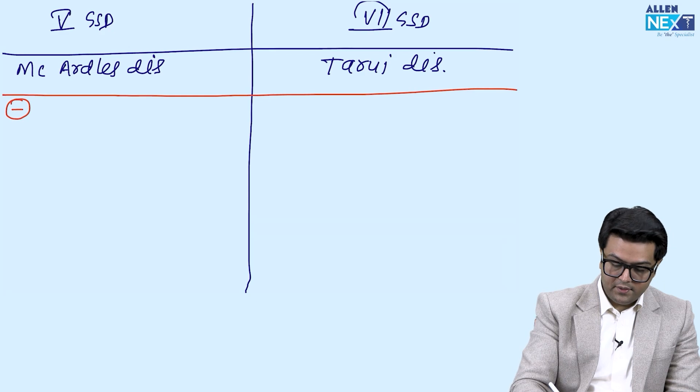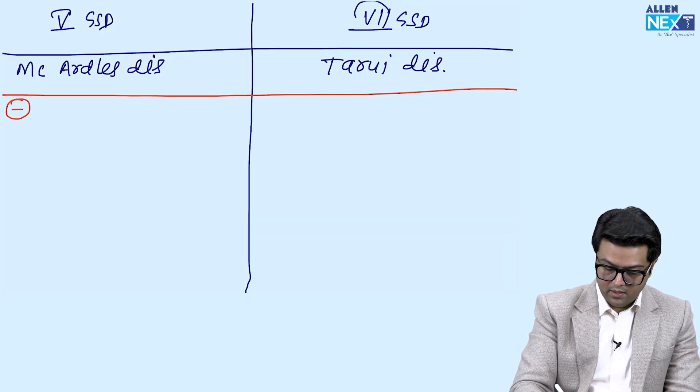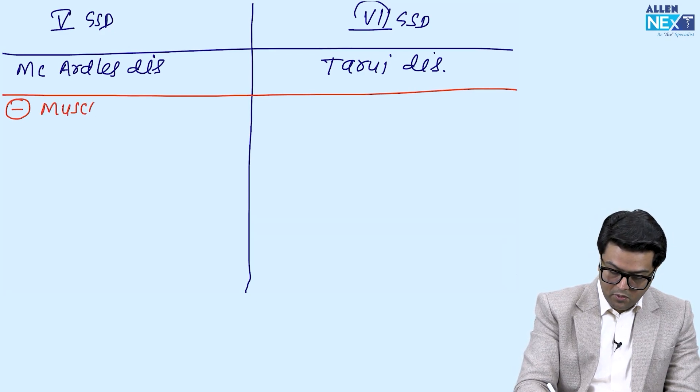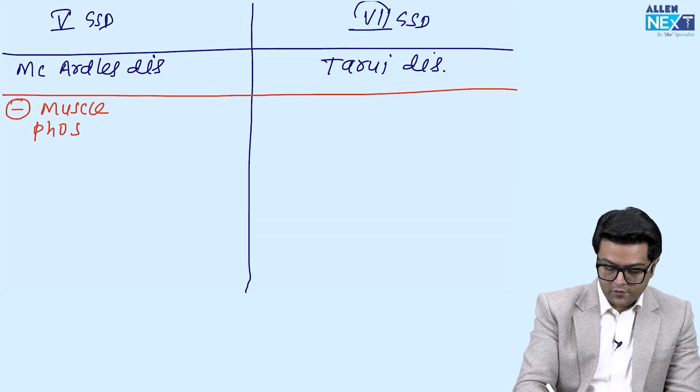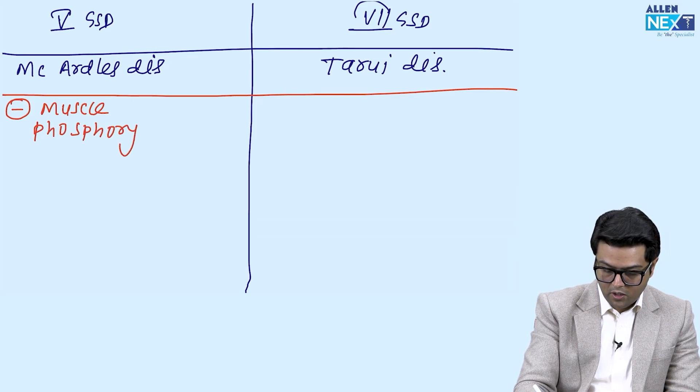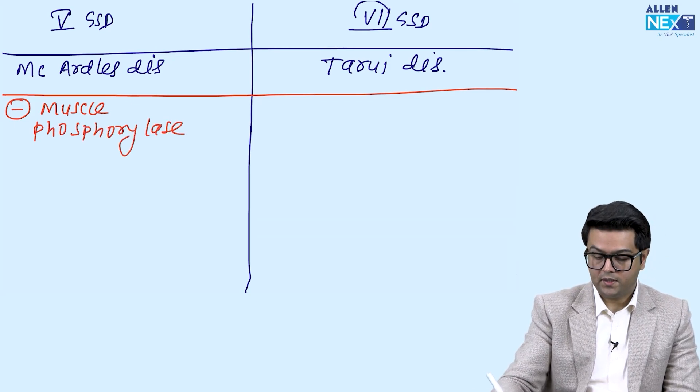In type 5, the deficient enzyme is muscle phosphorylase.